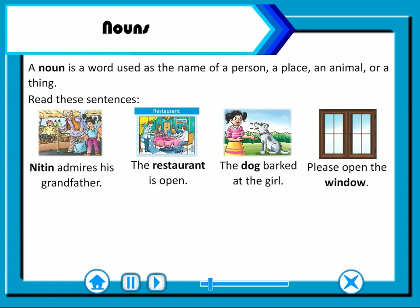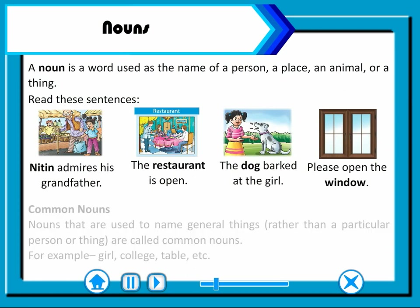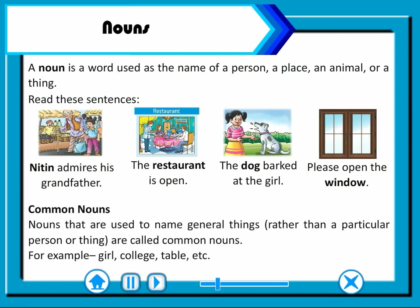Read these sentences: Nitin admires his grandfather. The restaurant is open. The dog barked at the girl. Please open the window. Common nouns are nouns that are used to name general things rather than a particular person or thing. For example: